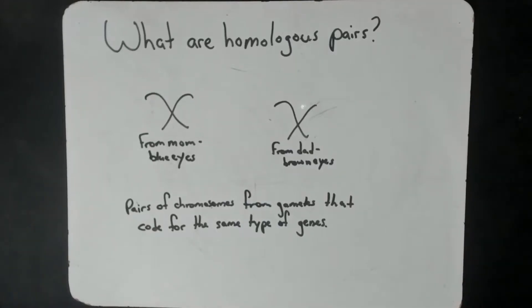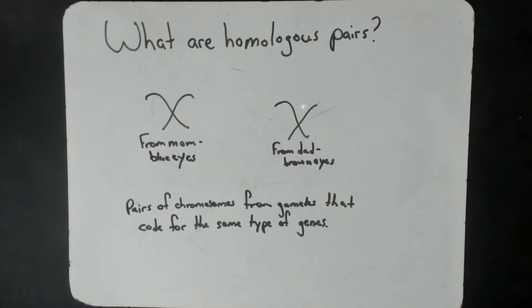Homologous pairs are pairs of chromosomes that come from gametes, or reproductive cells like eggs and sperm. And these chromosomes are going to code for the same type of genes. So for example, a mom might give a chromosome that codes for blue eyes, and a dad might give a chromosome that codes for brown eyes, but because they both code for eye color, they are homologous chromosomes, they are a homologous pair.